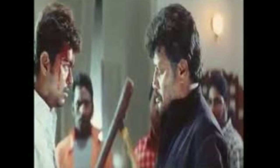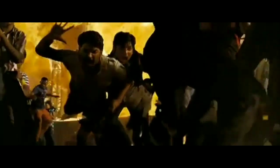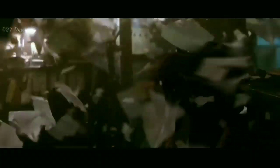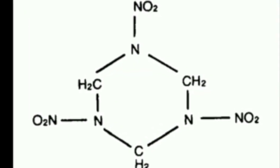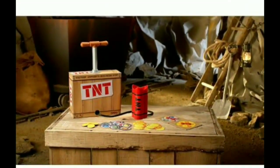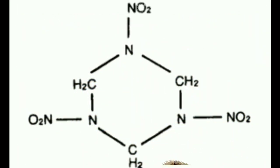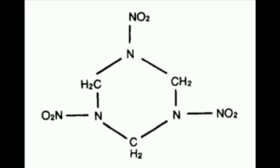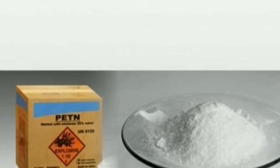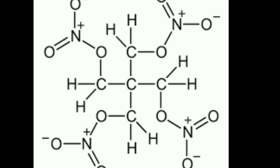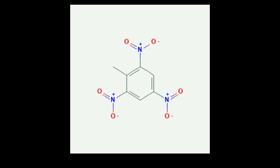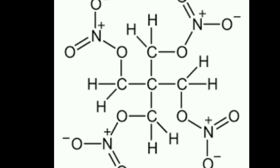If you look at the movies, you can see RDX bombs being used. This is TNT, but TNT is very unstable. You can also see PETN and Nitroglycerin in films. During World War II, DETN was used as an explosive compound.